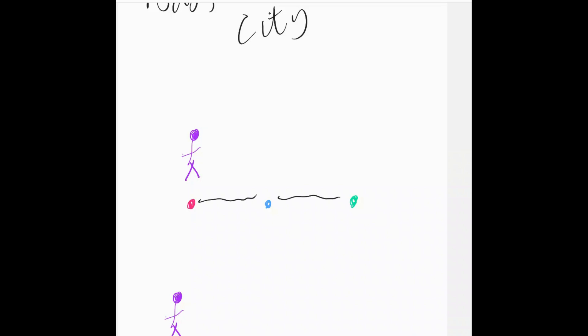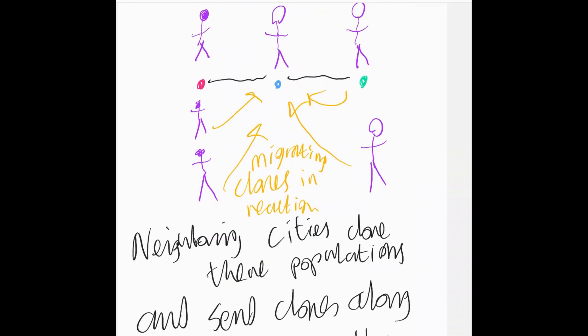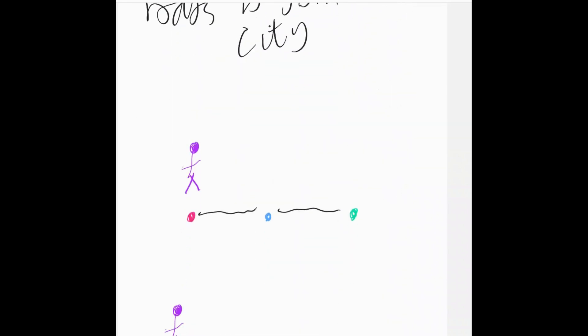And then when we play this population game, starting with a particular graph, we can look at all of the population vectors that are reachable by playing the game, starting off with the different unit population vectors. And that's going to give us this root lattice.